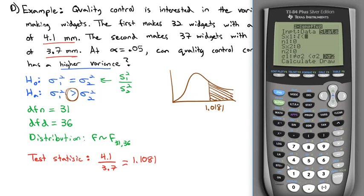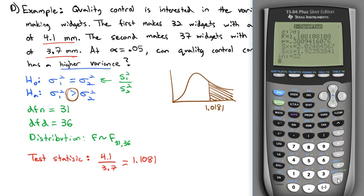I can type in the square root — the square root key is above the square, diagonal from the 7. My first variance was 4.1, so the standard deviation is the square root of 4.1, and when I hit enter it calculates that value. The first sample size had 32 widgets. The second machine had a variance of 3.7, so we take the square root of 3.7 to get the standard deviation of approximately 1.92, and the second machine made 37 widgets. For the alternate hypothesis, we said the first is greater than the second, so we select greater than, then go down and hit calculate. It gives us the exact same F statistic of 1.1081, and the p-value of 0.3809.